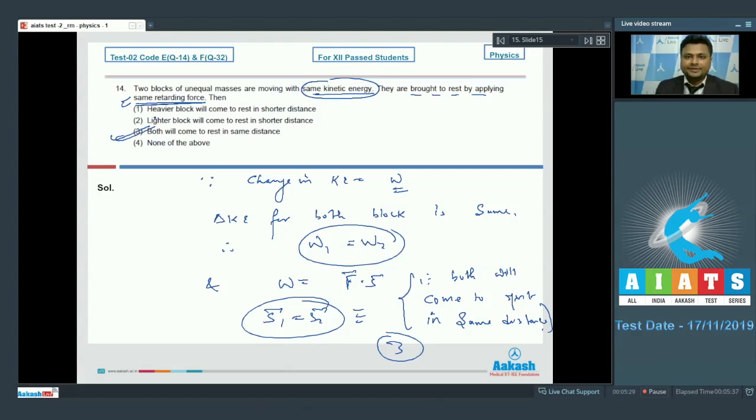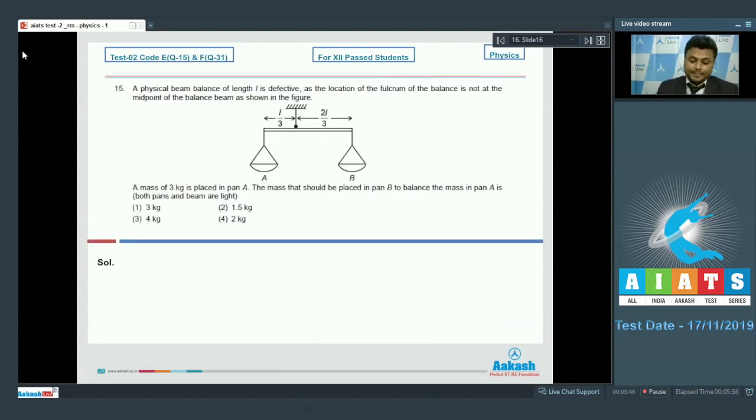Moving on to the next, that is 15 number. Question number 15. A physical beam balance of length small l is defective as the location of fulcrum of the balance is not at the midpoint of the balance as shown in figure. A mass of 3 kilogram is placed in pan A. The mass that should be placed in pan B to balance the beam will be what?